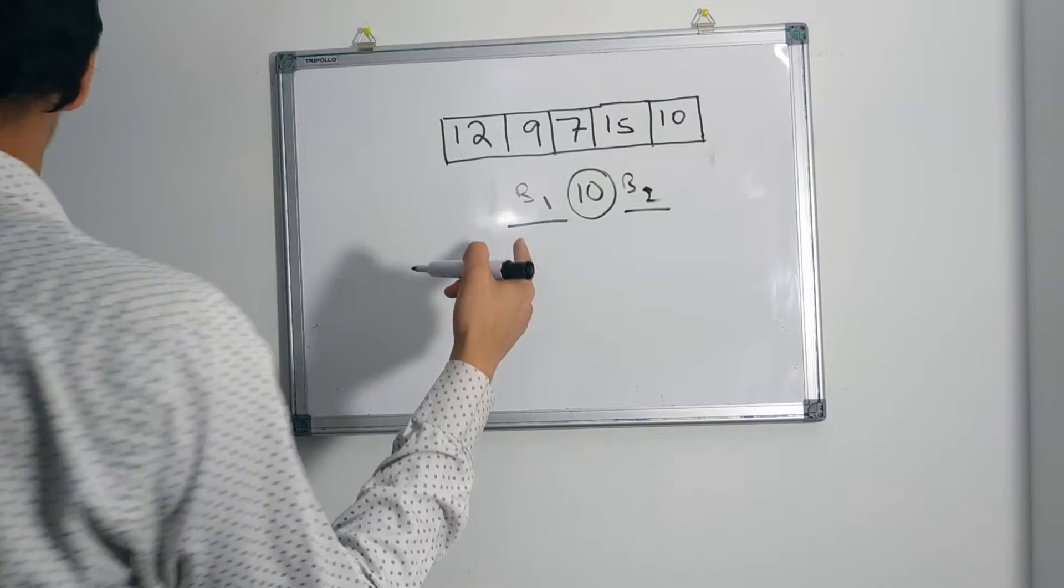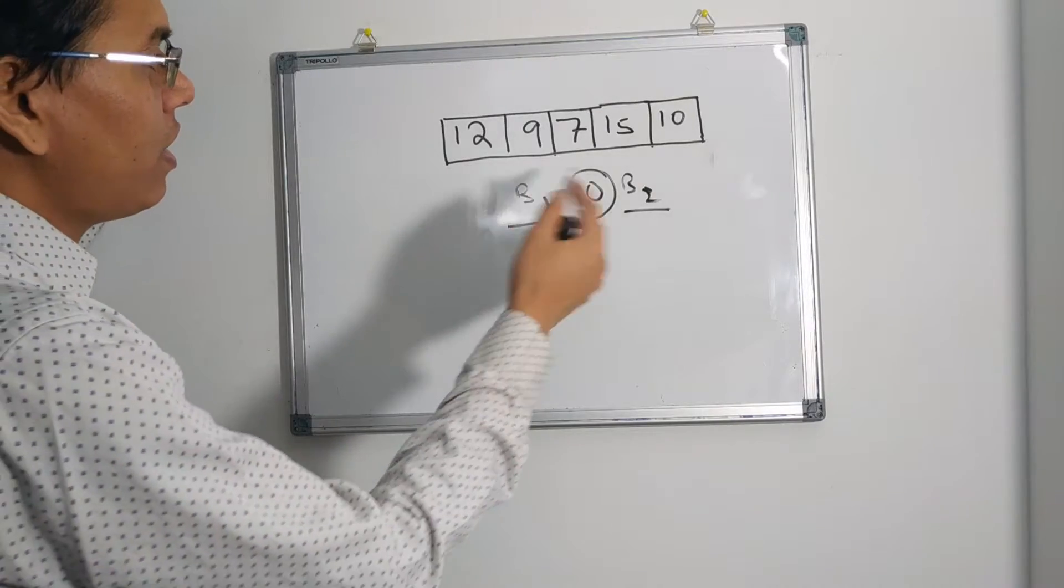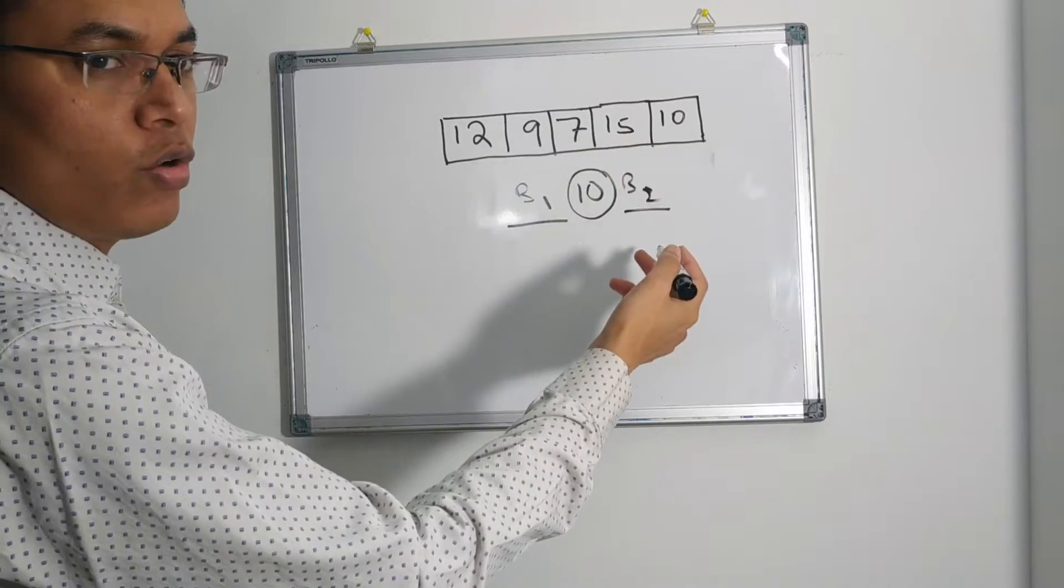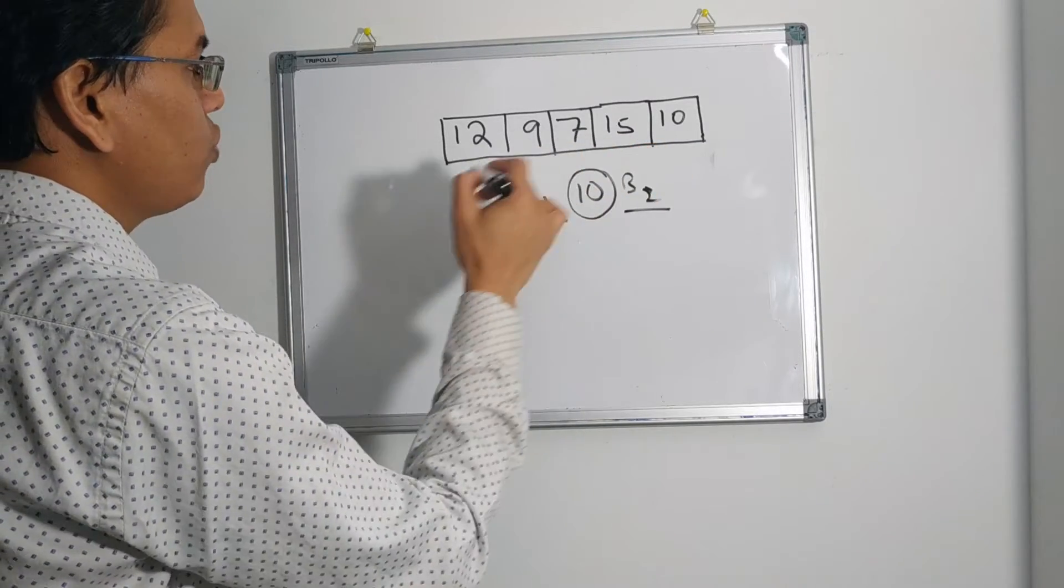If the number is greater than the given number, then we will throw it to B2 bucket. Let's do that.